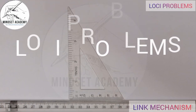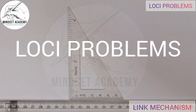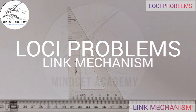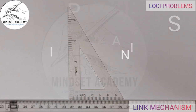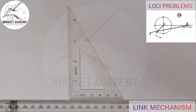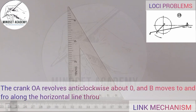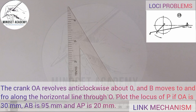Welcome to Mindset Academy, where we want to reproduce the figure displayed at the right-hand side of the screen. The question says: the crank OA revolves anti-clockwise about O, and B moves to and fro along the horizontal line through O. Plot the locus of P if OA is 30mm, AB is 95mm, and AP is 20mm.